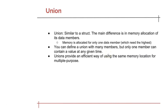Finally, let's learn about Union. Union is similar to structure, but the key difference is in memory allocation. When you define a union and declare a union type variable, memory is allocated for only one data member — equal to the memory required by the largest member. You can define a union with any number of members, but only one member can hold a value at a time.